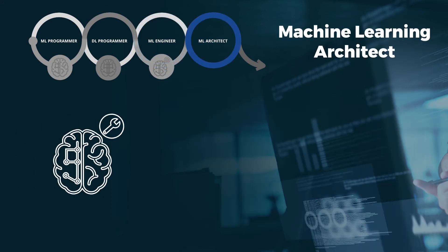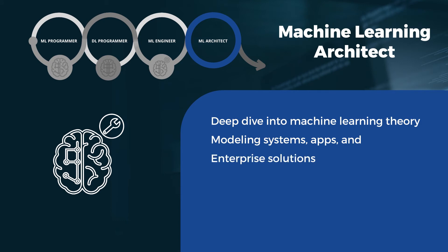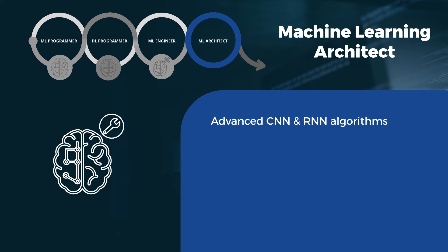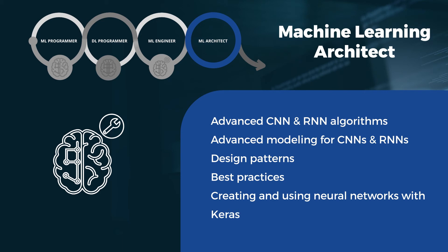The fourth and last step to becoming a machine learning architect involves a deeper dive into machine learning theory by modeling systems, apps, and enterprise solutions for the greatest impact. This track caps off your training by covering advanced CNN and RNN algorithms, advanced modeling techniques for CNNs and RNNs, implementation of design patterns in machine learning and deep learning, recommended best practices, and creating and using neural networks with Keras.